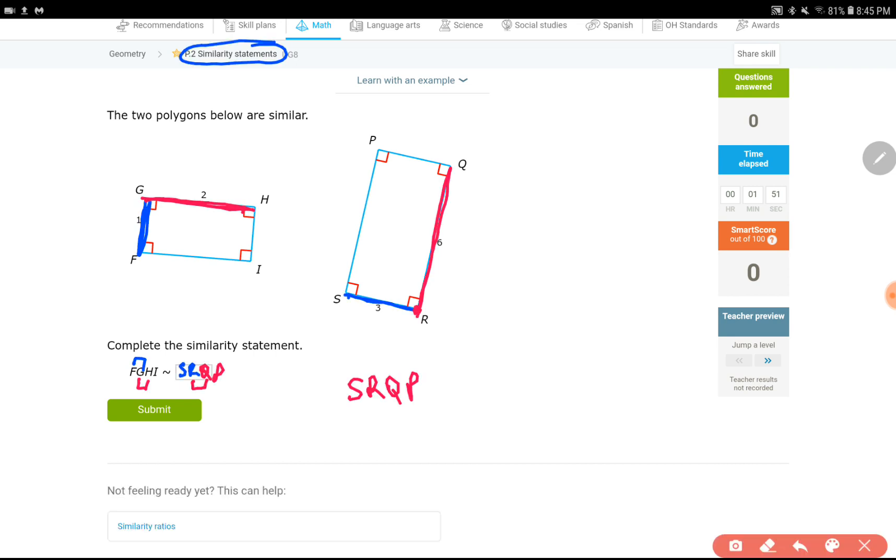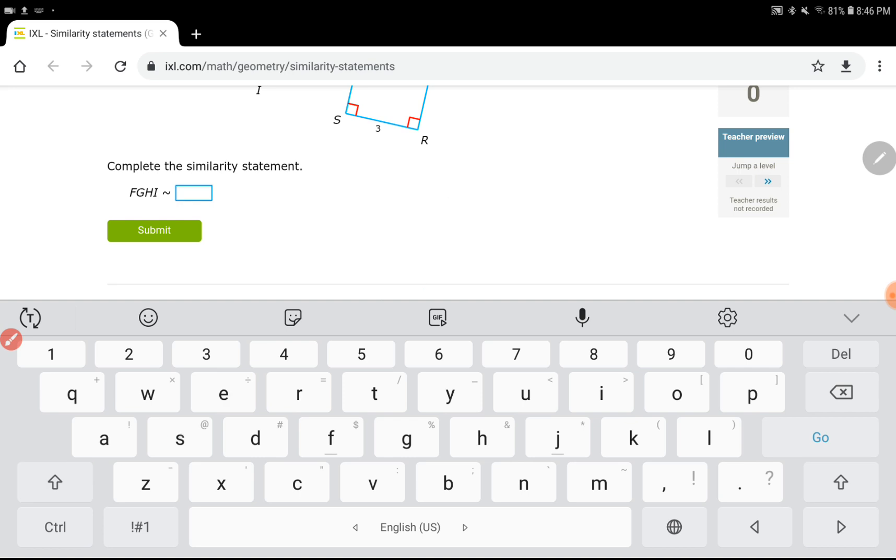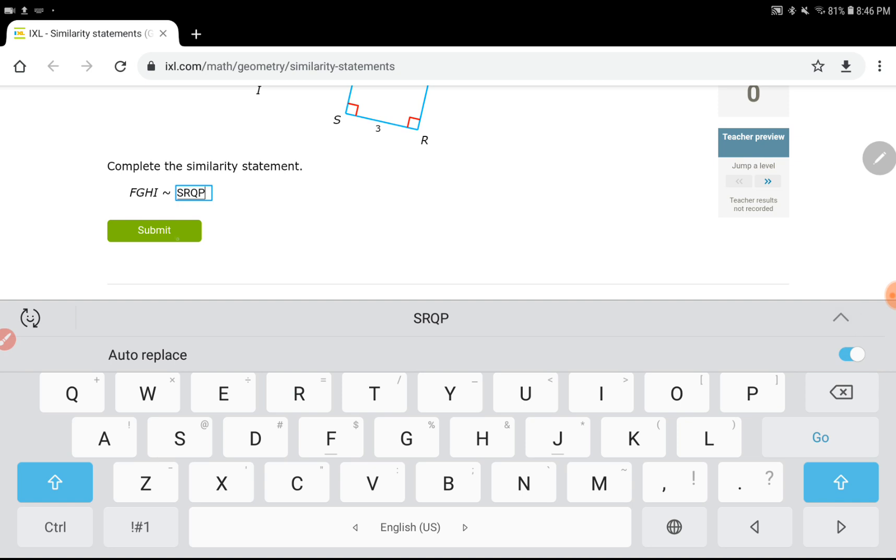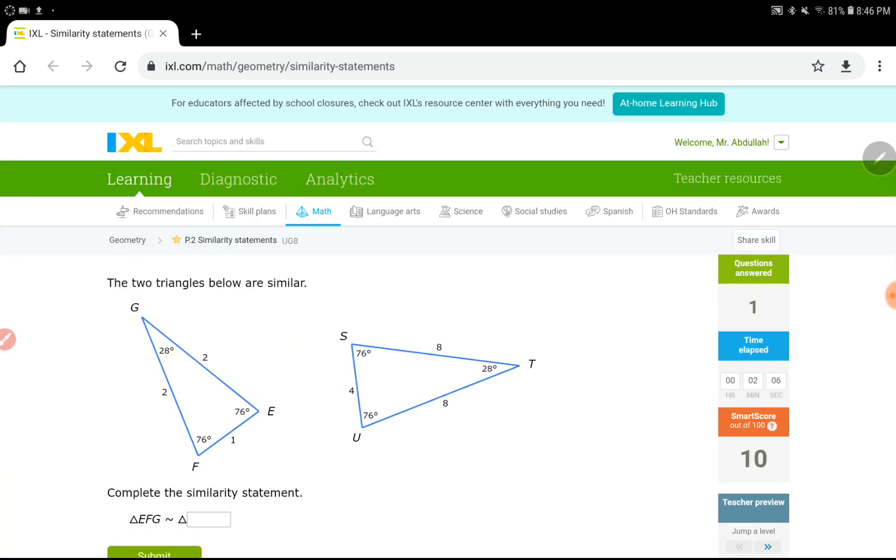So SRQP would be one of the right answers for this question. Let me test this out. I don't want to mislead you guys. SRQP, let's just type it out. And submit it. Okay, it works. They are not looking for a particular pattern or anything like that.